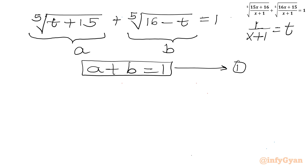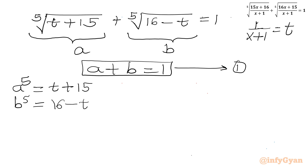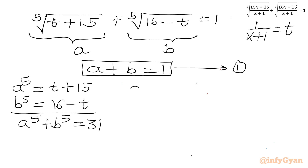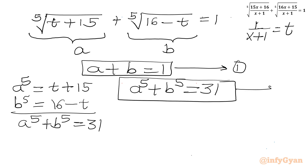For the second equation, note that a⁵ = t + 15 and b⁵ = 16 − t. Adding these gives a⁵ + b⁵ = 31. This is equation number 2.